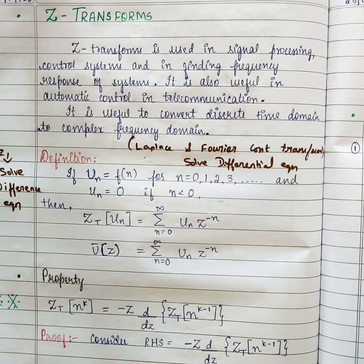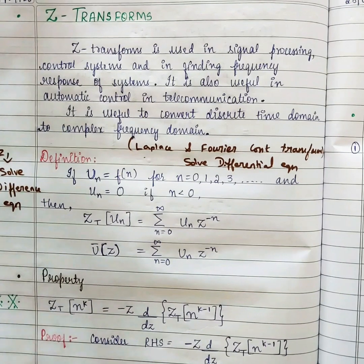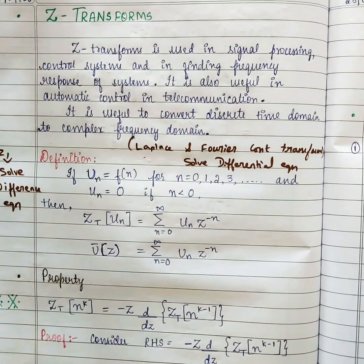When I say discrete version, we will be getting summation. If I say continuous version, just recollect the formula for Fourier transform — we will be writing integration. So discrete version is nothing but summation. The Z transform is used in signal processing, control systems, and in finding the frequency response of systems.